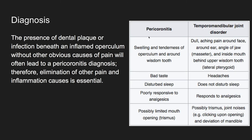In terms of its diagnosis, pericoronitis is a diagnosis by exclusion — you have to consider other conditions such as TMJ disorder, as presentations are quite similar. Symptoms include swelling and tenderness of the operculum and tissues around the wisdom tooth, bad taste, disturbed sleep, poor response to analgesics, and possible limited mouth opening. With TMJ disorder, the patient may experience headaches, jaw clicking, and sleep is not disturbed, whereas with pericoronitis sleep is disturbed.